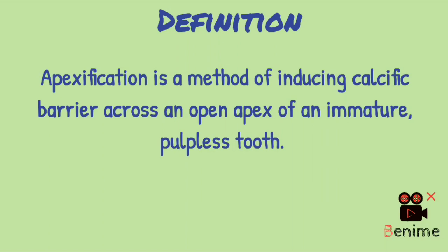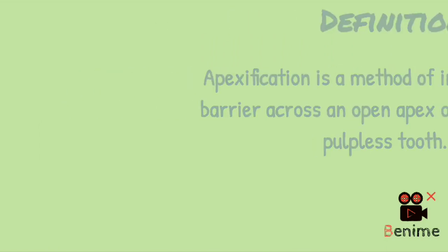It means the apical third is open, which is obviously seen in an immature tooth, and pulpless means non-vital. So it is a procedure that is performed in an immature non-vital tooth with open apex to bring out closure of the apical third by forming calcific barrier. So in turn, this calcific barrier helps us to obturate the canal. I hope you are clear with the definition.